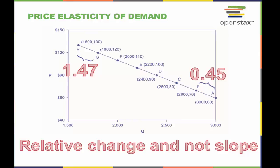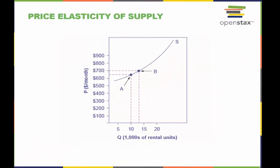The price elasticity of supply is calculated as the percentage change in quantity divided by the percentage change in price. This calculation is performed just like the one shown for price elasticity of demand. The meaning of the size of the coefficient is the same as well. If the price elasticity of supply is greater than 1, then it is considered elastic. If it is 1, it is considered unit elastic. And if it is less than 1, it is considered inelastic.